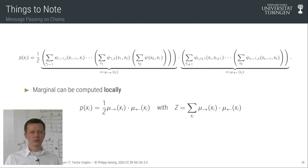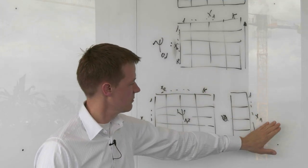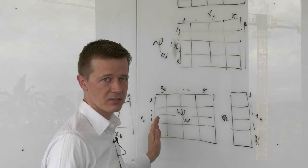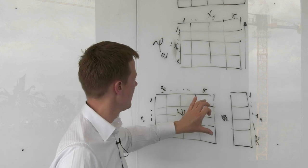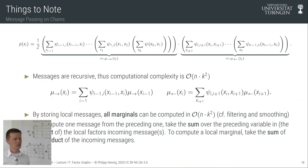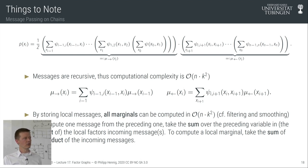Each message computation costs k² operations (multiplying a length-k vector with a k×k matrix), and we perform this n times through the chain, giving total cost O(nk²)—far cheaper than the general case cost of k^n. We have now constructed the first example of the sum-product algorithm, also called the message-passing or forward-backward algorithm, for computing marginals in a discrete hidden Markov model.